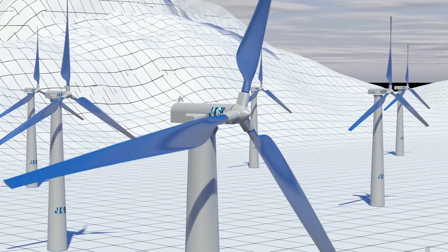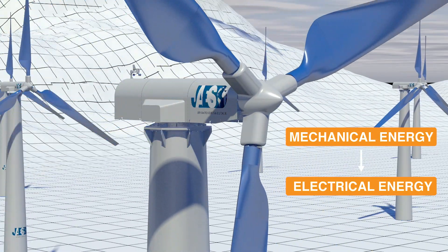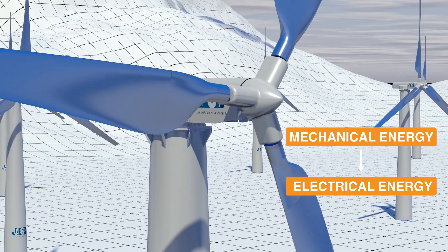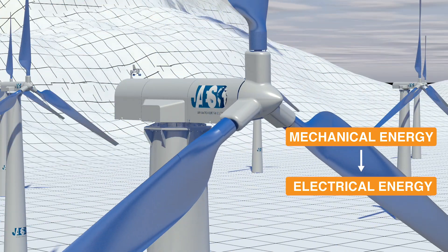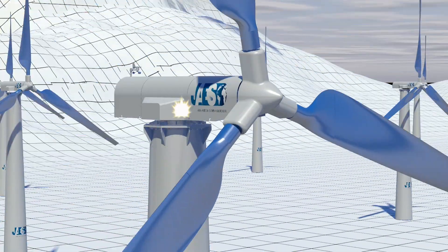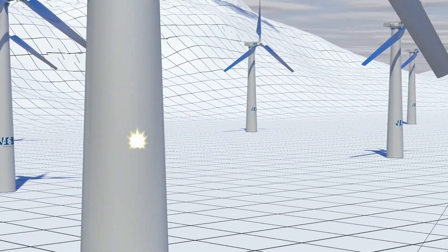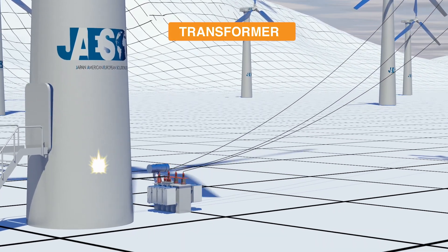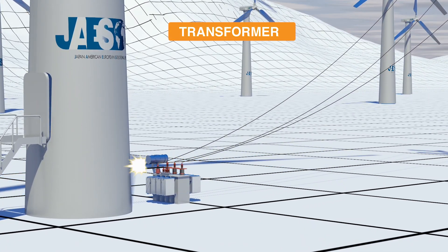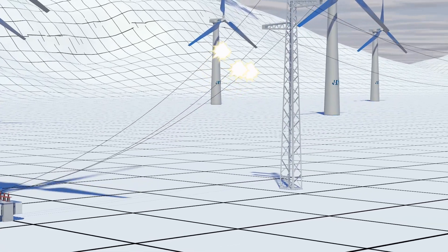Wind turbines transform mechanical energy into electrical energy. The wind energy caught by the wind turbine is transferred via a mechanical shaft to a generator. The generator transforms the rotation energy into electrical energy, which in turn is transferred to a transformer usually placed at the base of the wind tower. The transformer acts as a link between the wind turbines and the distribution grid, stepping up the low output voltage from the generator to a higher distribution voltage level.